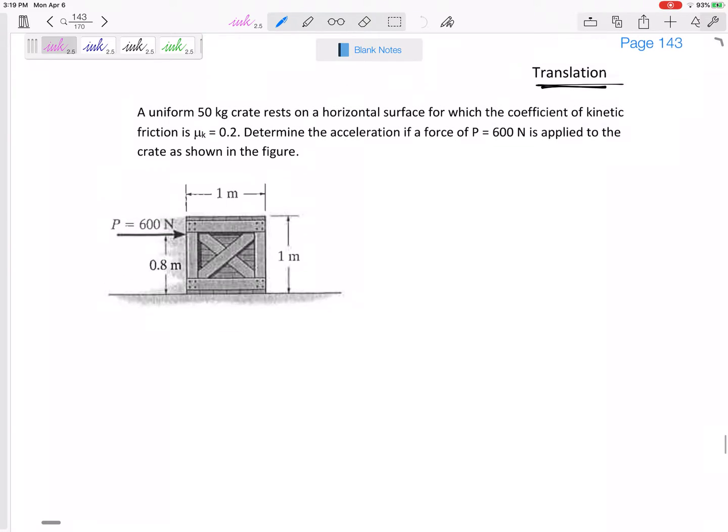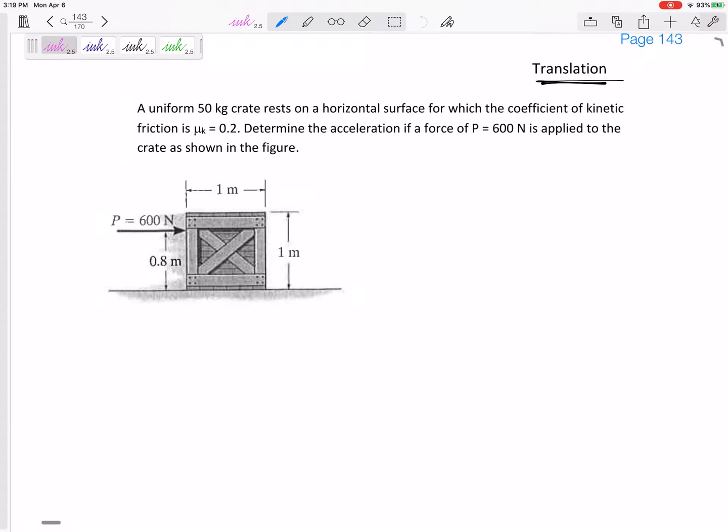All right, so let's look at this problem. We've got a box that is sliding on this horizontal surface. This coefficient of kinetic friction is 0.2. It's a uniform 50 kilogram crate. The acceleration when a 600 Newton force is applied to the crate as shown.